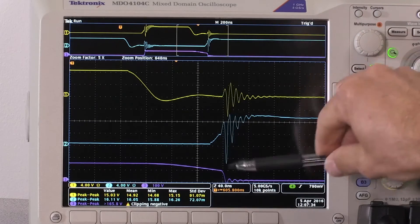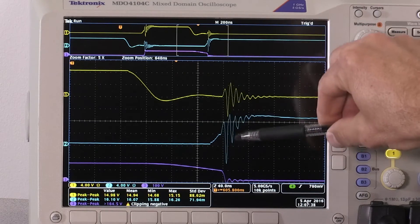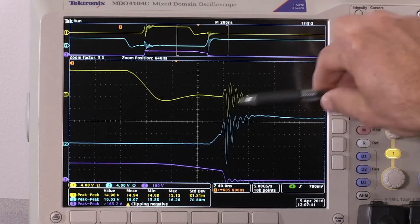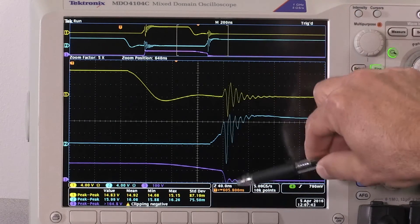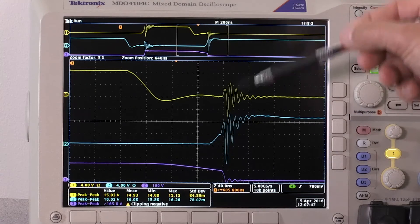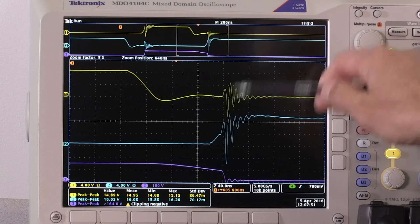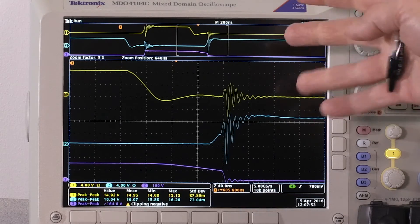You can also see the parasitic coupling from the switch node into both of the gates, and the ringing caused by the parasitic coupling onto the high-side gate node, which is especially concerning.